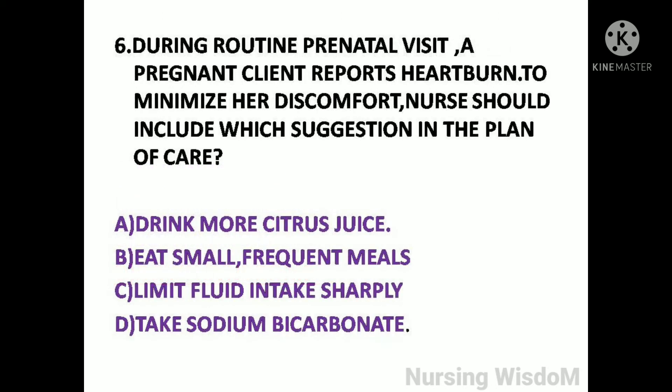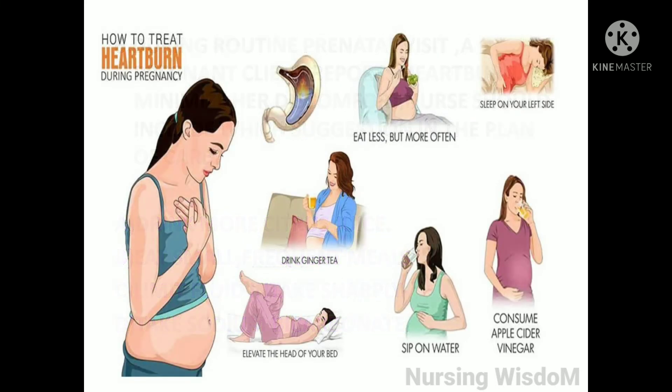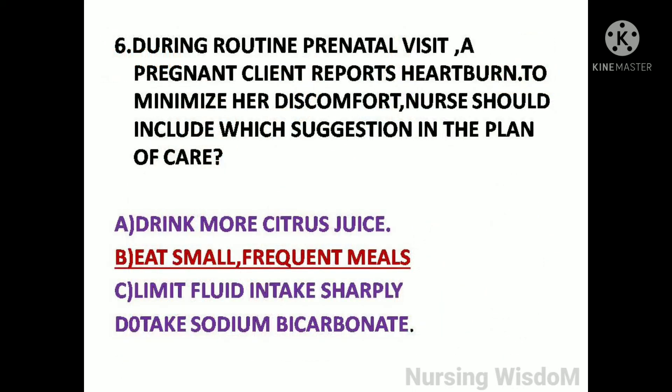Next question: During a prenatal visit, a pregnant client reports heartburn. To minimize her discomfort, the nurse should include which suggestion in the plan of care? Option A: drink more citrus juice; option B: eat small frequent meals; option C: limit fluid intake sharply; option D: take sodium bicarbonate. How to treat heartburn during pregnancy: eat less but more often, sleep on your left side, consume apple cider vinegar, sip on water, elevate the head of your bed, drink ginger tea. So here the answer is option B, eat small frequent meals.